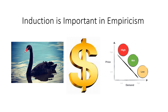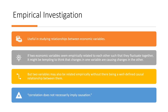In empirical analysis, induction helps us formulate hypotheses, theories, and models by generalizing from observed data, which we can then test further through additional observations or experiments. It is a fundamental tool for building our understanding of the world based on evidence and observation. Empirical investigation is useful in studying relationships between economic variables. If two economic variables seem empirically related such that they fluctuate together, it might be tempting to think that changes in one variable are causing changes in the other. However, two variables may be related empirically without a well-defined causal relationship — correlation does not necessarily imply causation.